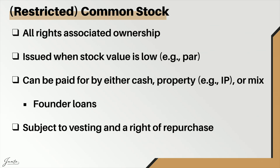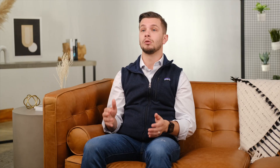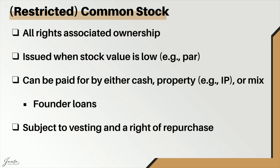Let's go back to common stock and think about WeWash. Common stock carries all the rights associated with ownership and the equity upside. You want to issue common stock — more specifically restricted common stock — when the stock value is low. We talked about keeping par value low. When paying for common stock, founders generally pay in either cash or property such as intellectual property, or a mix. The founding team contributes something — cash or IP rights — in exchange for this common stock.